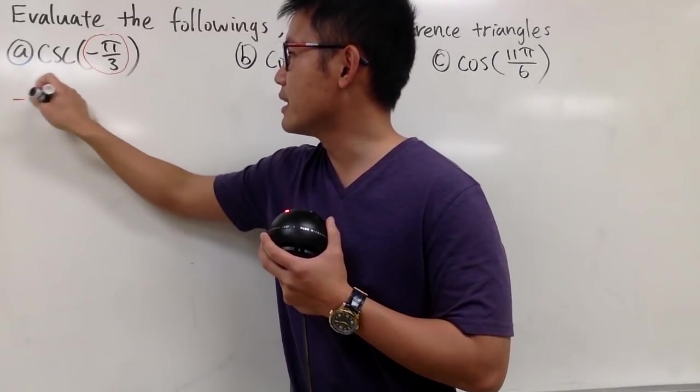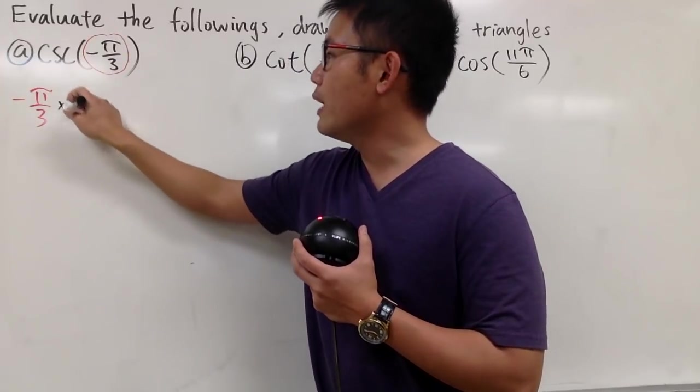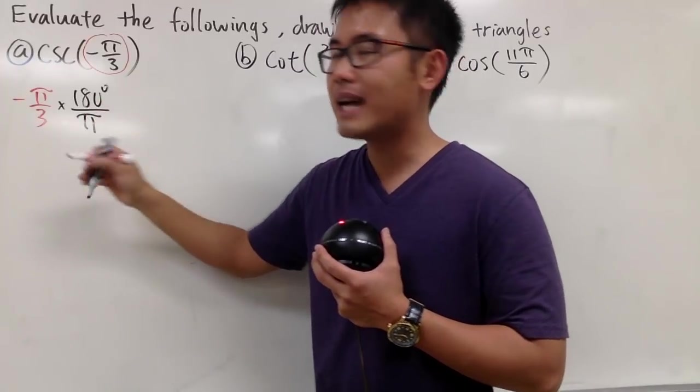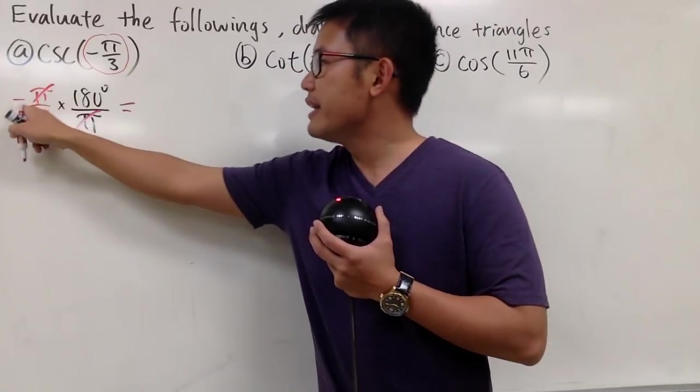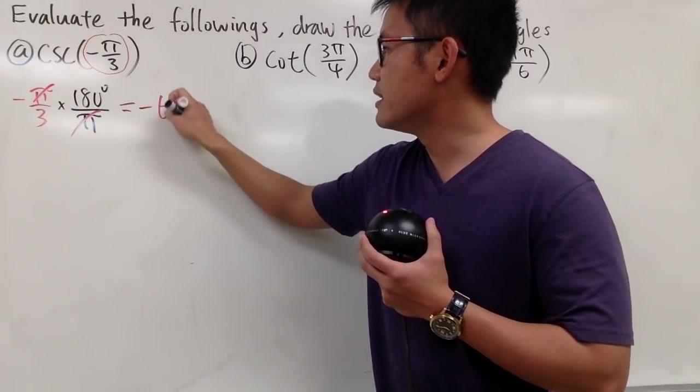To do so, we can write this down: negative pi over 3, and then multiply by 180 degrees over pi. The pi and pi cancel, and this is essentially negative 180 divided by 3, and we get negative 60 degrees.